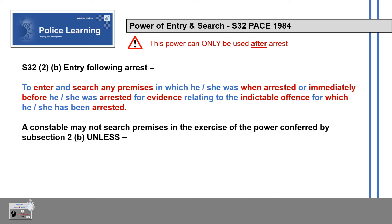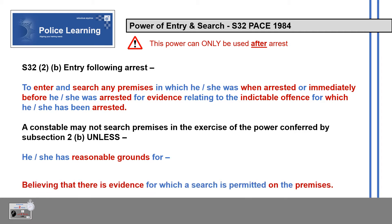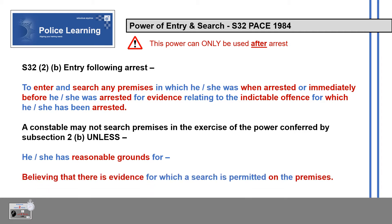The constable may not search premises in the exercise of the power conferred by Subsection 2 unless he or she has reasonable grounds for believing that there is evidence for which a search is permitted on the premises.